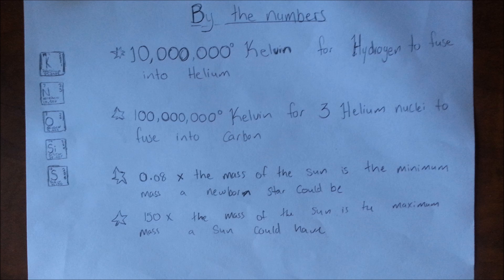It takes 100 million Kelvin for three helium nuclei to fuse into one carbon. 0.08 times the mass of the sun is the minimum mass a newborn star could be. 150 times the mass of the sun is the maximum mass a star could have.